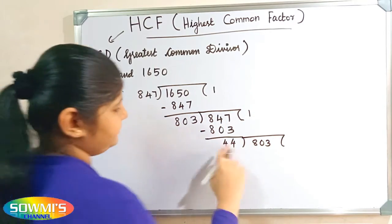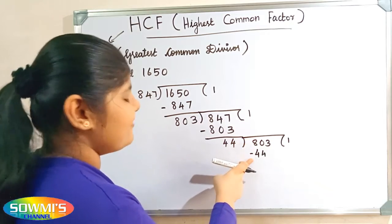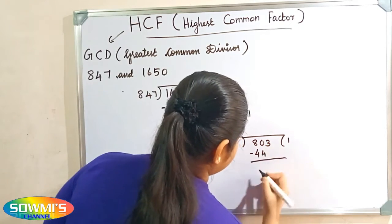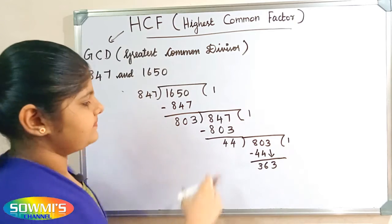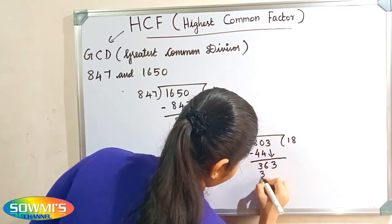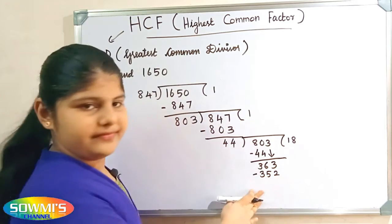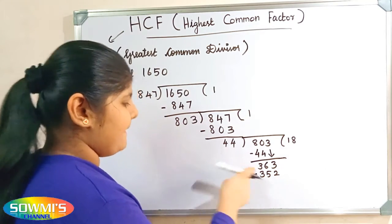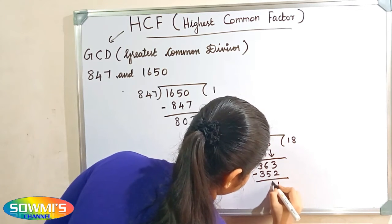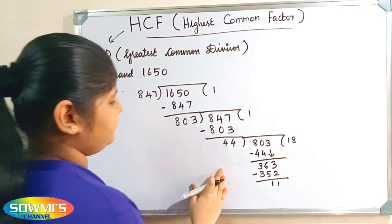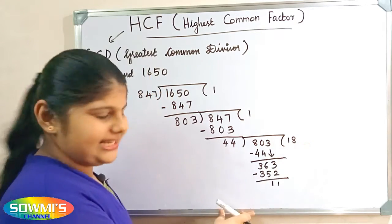Now we will divide 803 by 44. When we subtract: 80 minus 44 will be 36, and 363 minus 352 gives 11. So when we divide 803 by 44, our quotient will be 18 and our remainder will be 11.